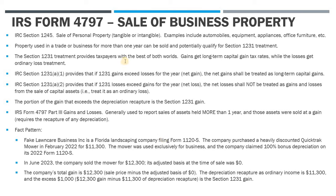When we talk about business property, we're really looking at whether it's 1245 or 1250 property — those are the most common ones. Section 1245 is the sale of personal property — tangible or intangible property that is not real estate — versus 1250 property, which is real estate. When we have property that was used in a trade or business and held for more than a year, if you sell that property, after accounting for any depreciation recapture, you could potentially get Section 1231 treatment.